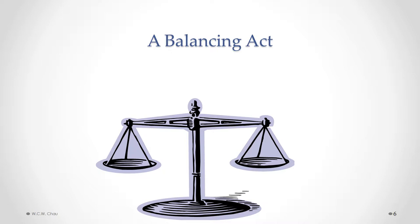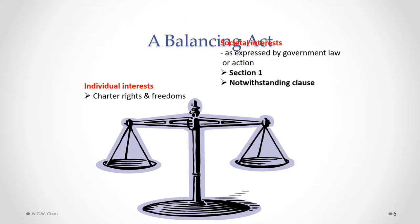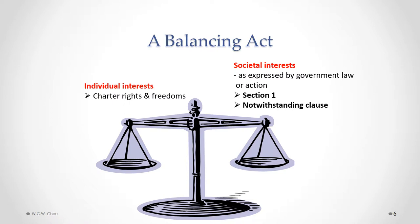The way the Charter is set up can be best described as a balancing act. On one side of the scale we have individual interests such as freedom of expression, freedom of religion, and all the various rights and freedoms protected by the Charter. On the other side we have societal interests, expressed through the laws and actions passed by democratically elected governments. The legal mechanisms in the Charter to reflect societal interests are Section 1 and the notwithstanding clause.